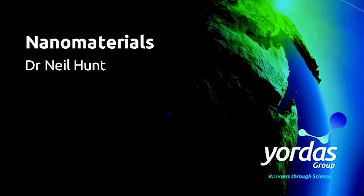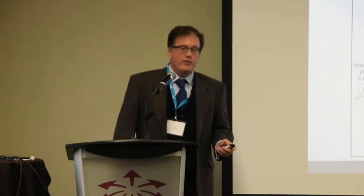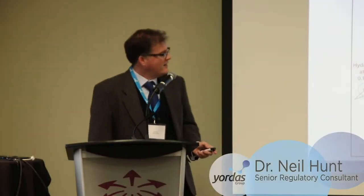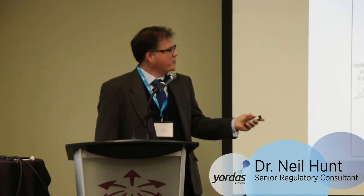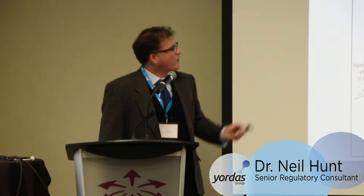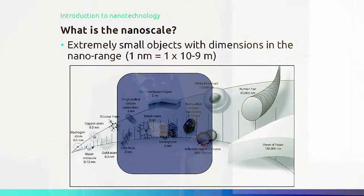So what are nanomaterials? What we're really looking at are objects with very, very small dimensions in the nanoscale. A nanometer is 1 times 10 to the minus 9 meters, so very, very small.